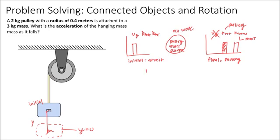So I know that the initial potential energy is going to be equal to the final rotational and the final translational kinetic energy. That is my energy conservation equation.